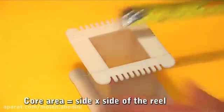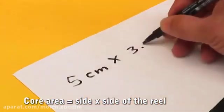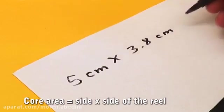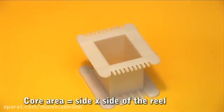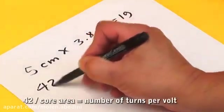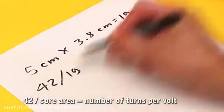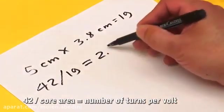In this case, we have a formwork of 5 cm by 3.8 cm, which gives us a core area of 19 square centimeters.